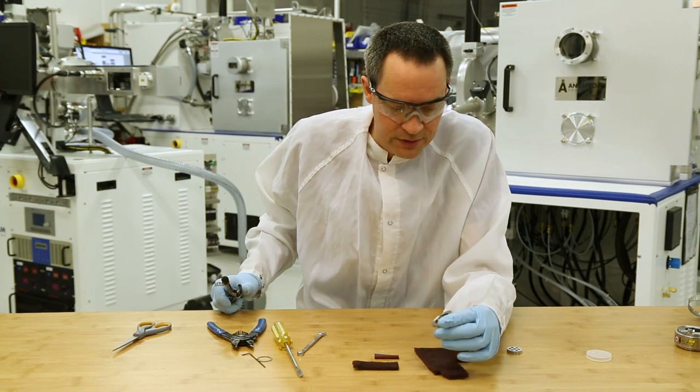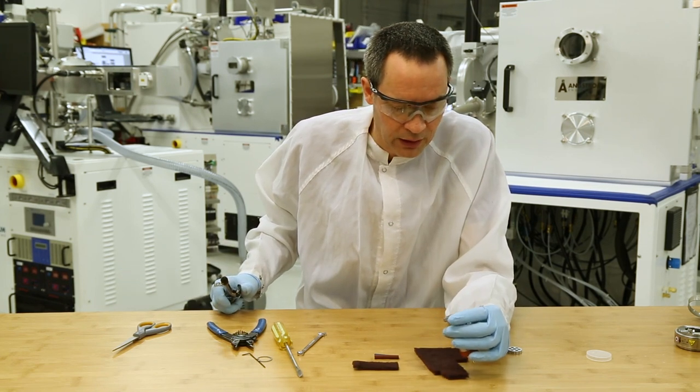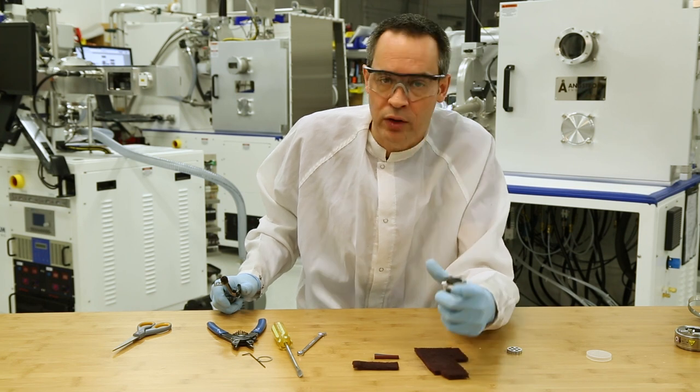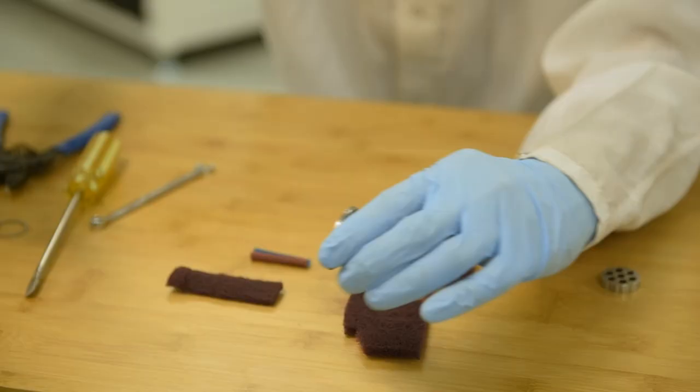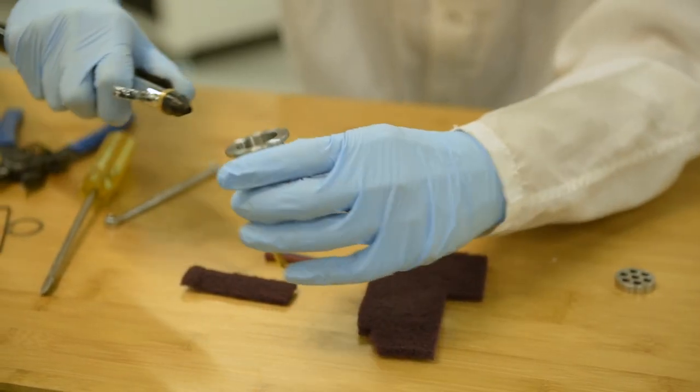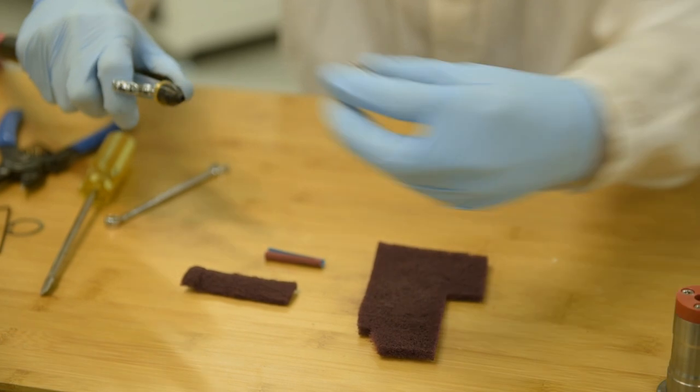Next we're going to blow off some of the particulate. You can use a handheld can of air like you would to clean a computer keyboard. We have compressed air so I'm going to do that. Same for the pole piece.